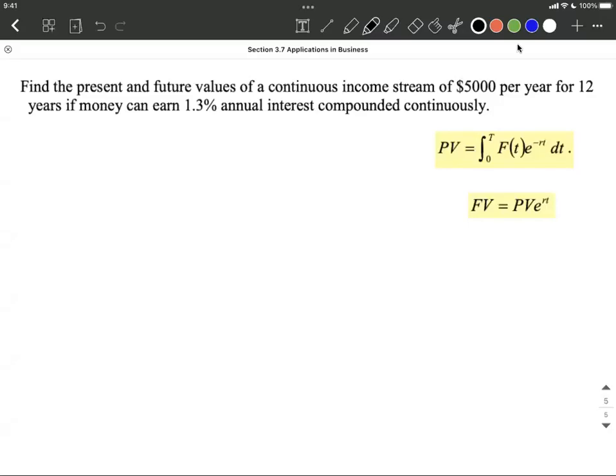Okay, a continuous income stream problem. We want to know what the present and future values will be of a continuous income stream of $5,000 per year for 12 years if money can earn 1.3% annual interest compounded continuously.